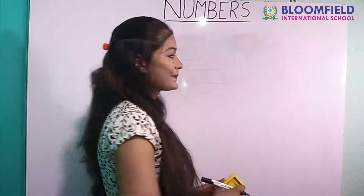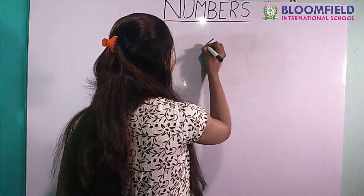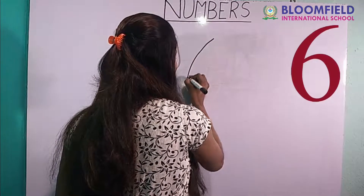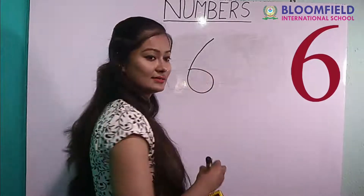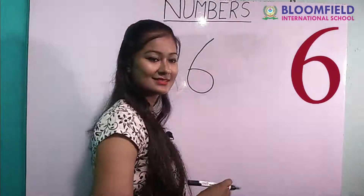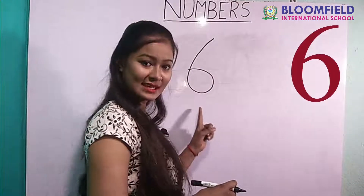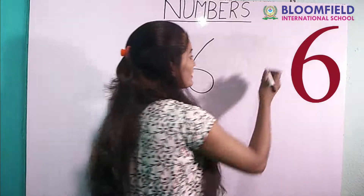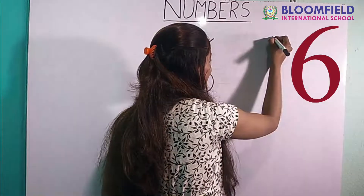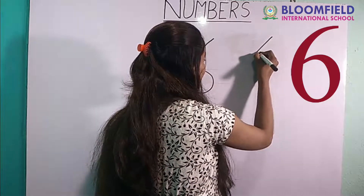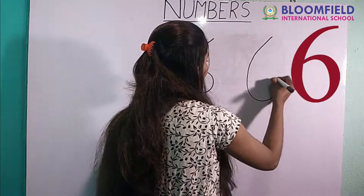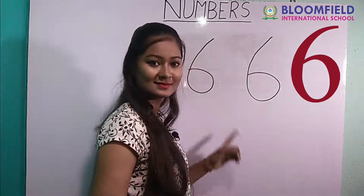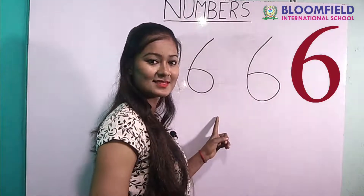Next: slanting line and circle. Six. Small slanting line and circle. Six.